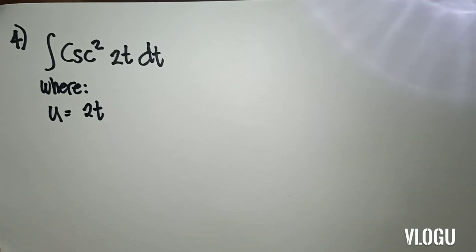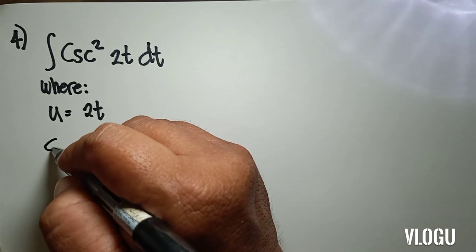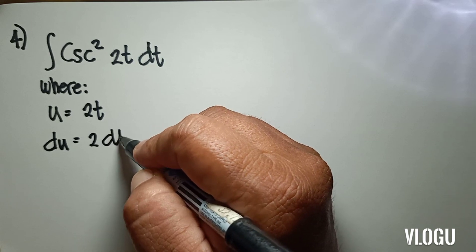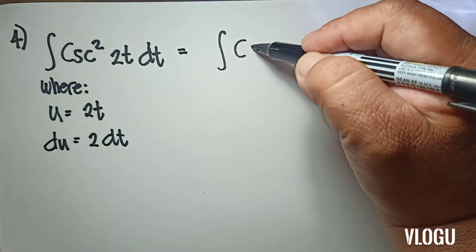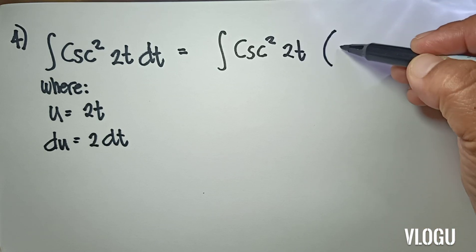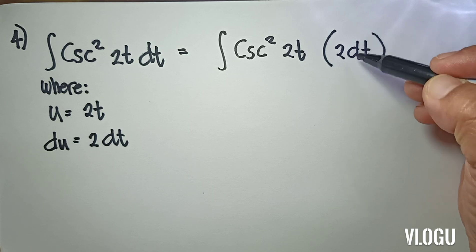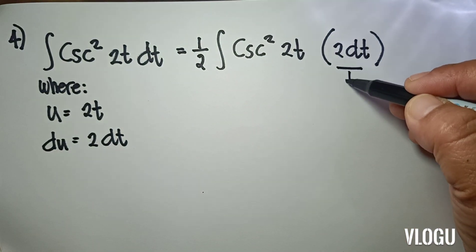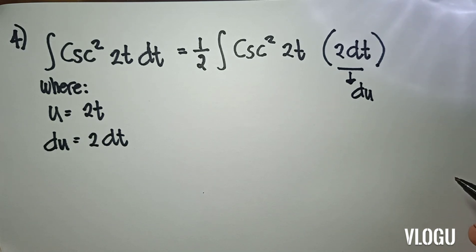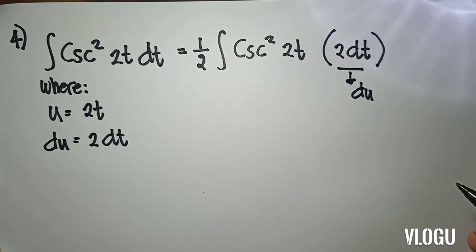The next example: the integral of csc²(2t) dt. In this example, our u is equal to 2t. So we have the integral of csc²(2t), with du equal to 2 dt, so we multiply 2 and multiply 1/2 outside. This is our du. We have the integral of csc² u du, which is equivalent to negative cotangent.